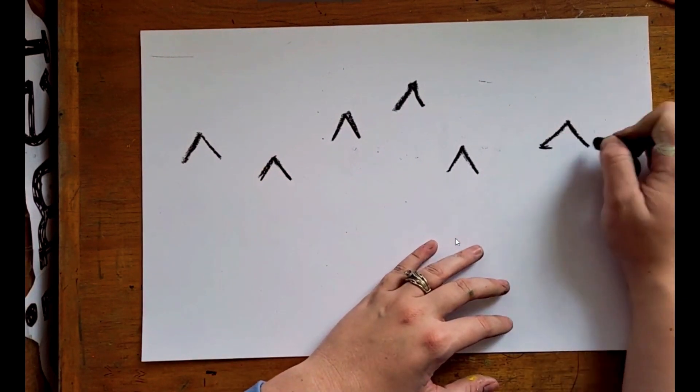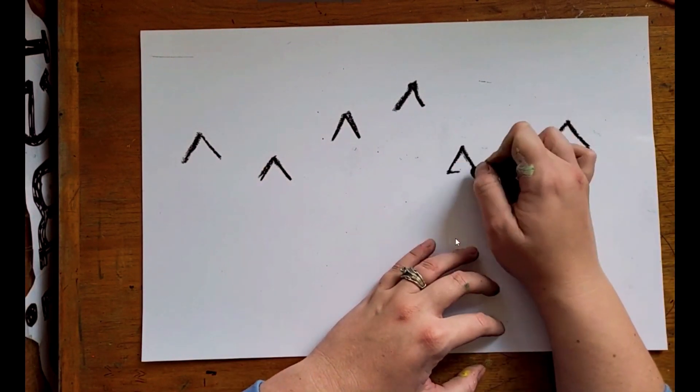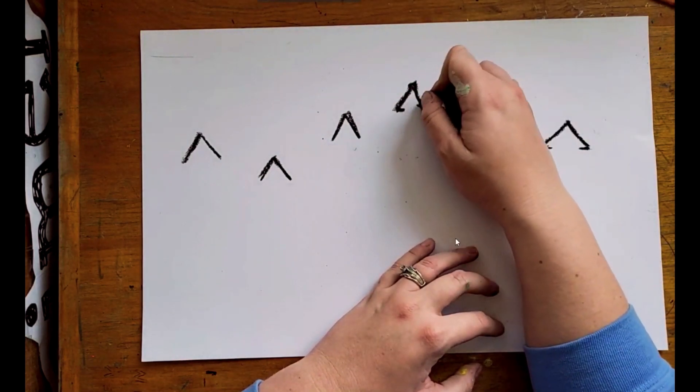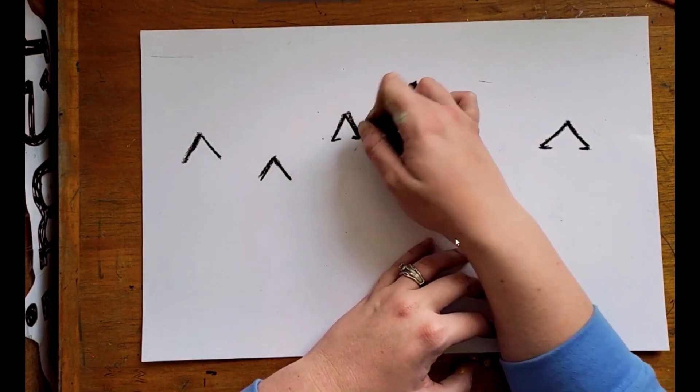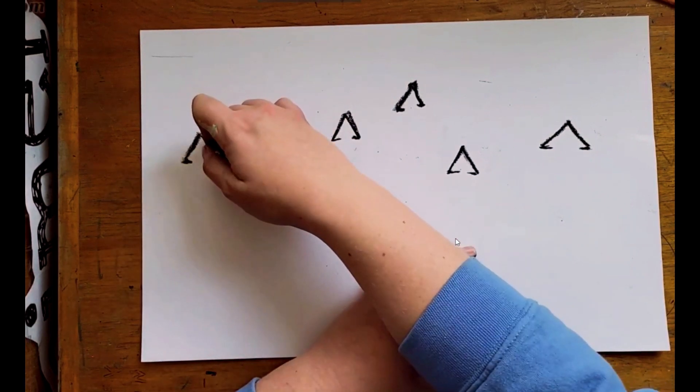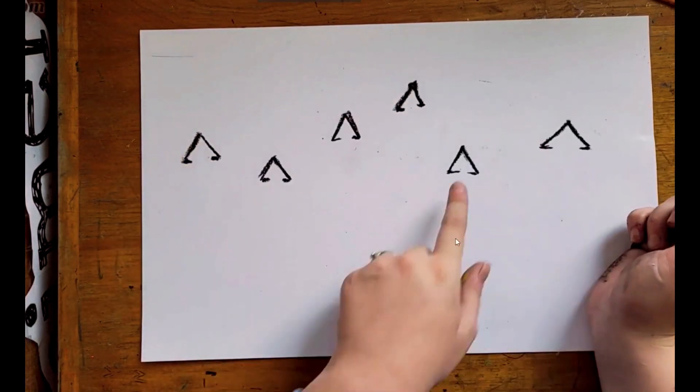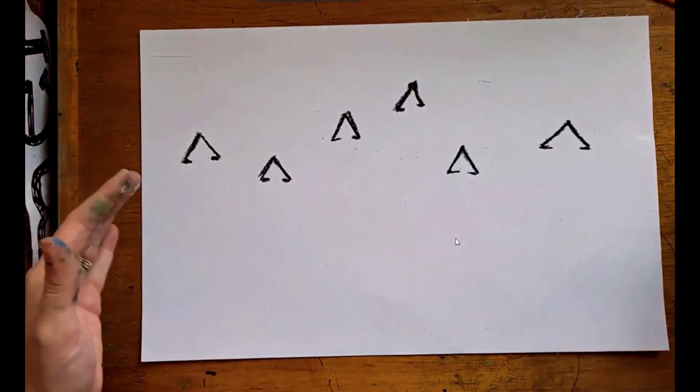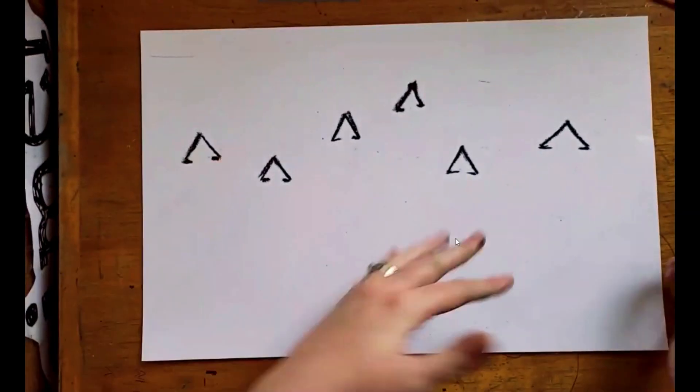So these are evergreen trees. That means that the tree stays green all year long and the leaves don't fall off. They're usually pine needle trees. So we're going to draw two little nubs on the inside of all six of them to show that that's like the first layer of the pine needles.